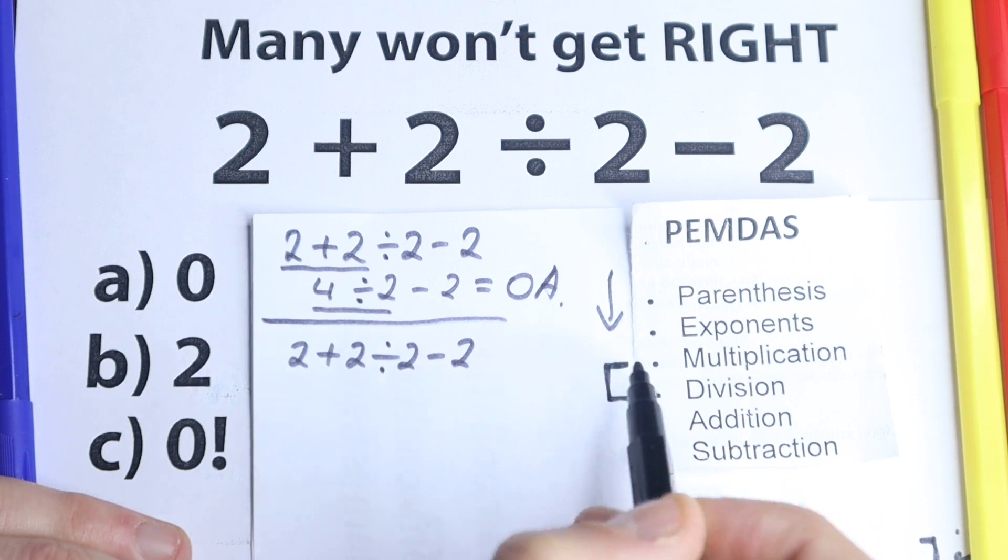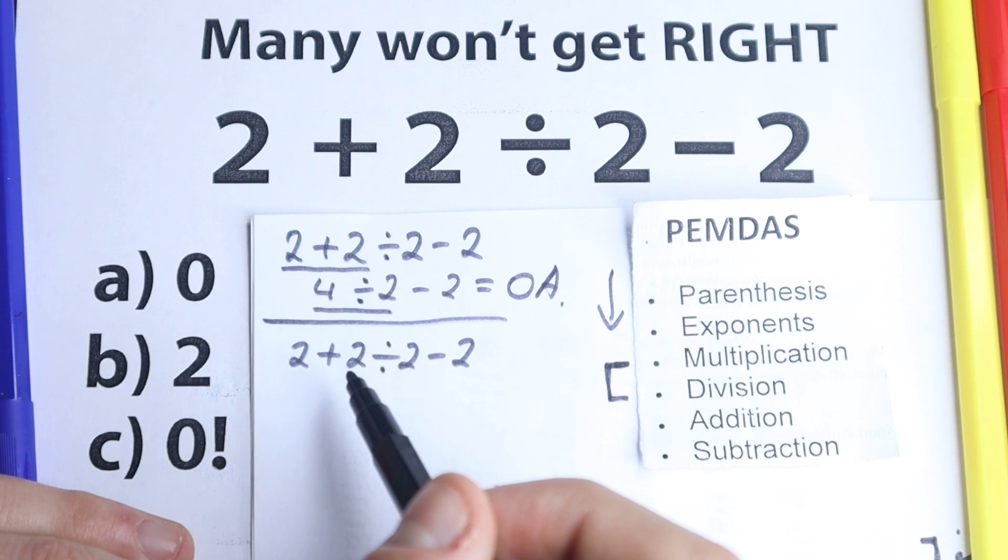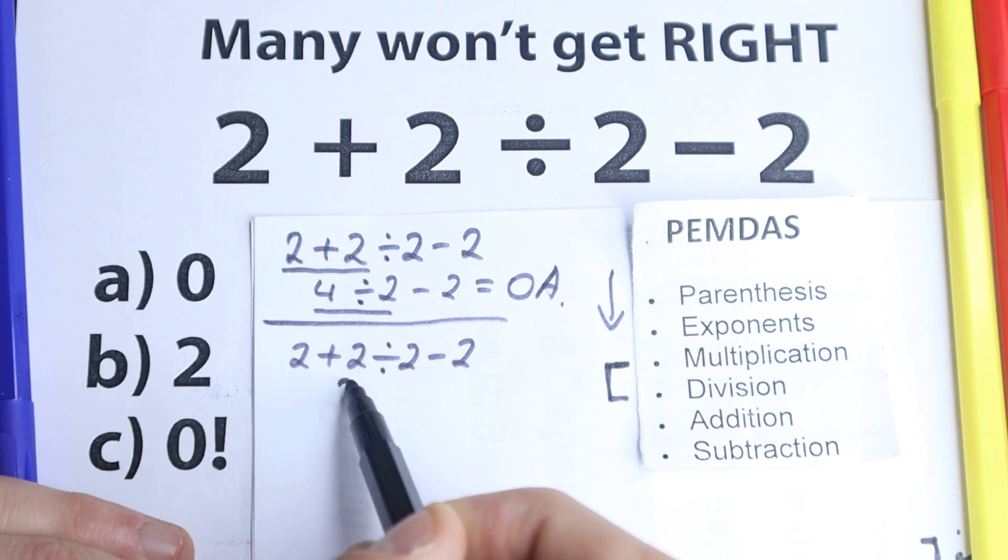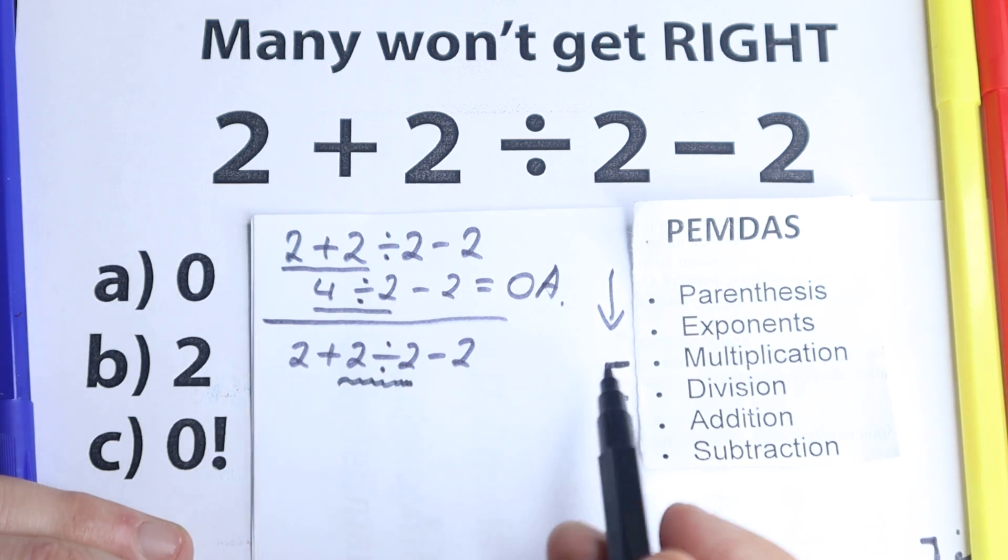Multiplication and division part. And now we need to scan, are there any multiplication and division signs? Let's look at it. Right here, addition. Right here, yeah, we have division right here. So we need to start from this division.